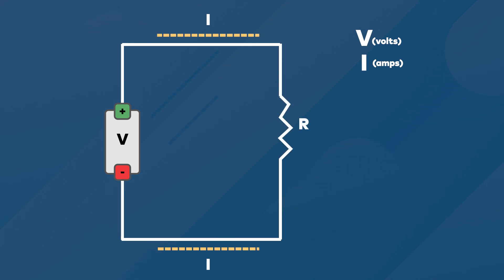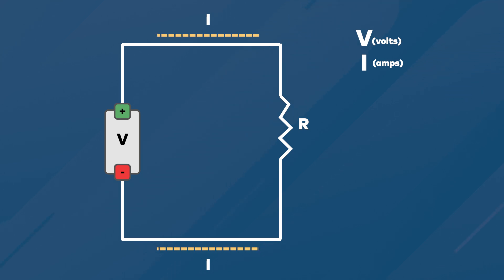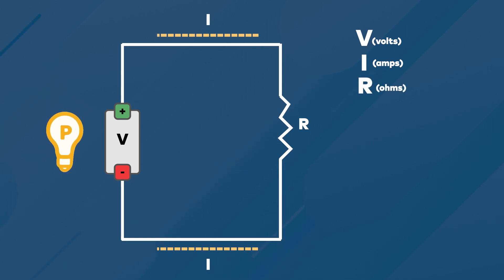Electrical resistance measures how much electricity a device or load will use. Every electrical device we use, such as light bulbs or toasters, will have a resistance value. Resistance is measured in ohms. Finally, we use the term watts to indicate the amount of power which is being used by a lighting circuit.